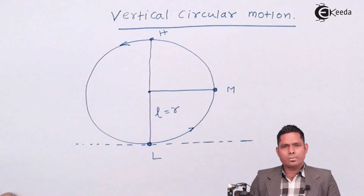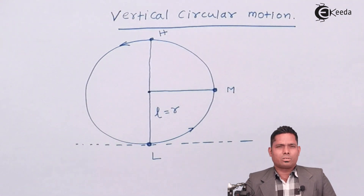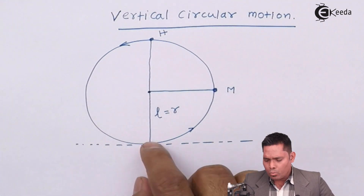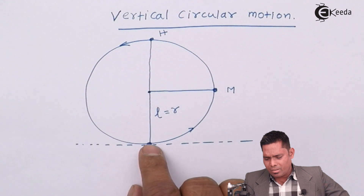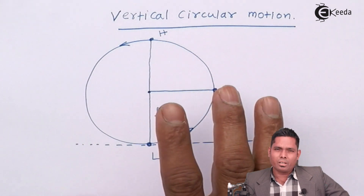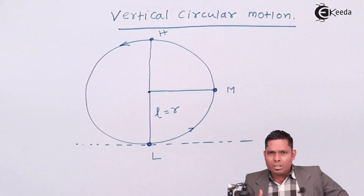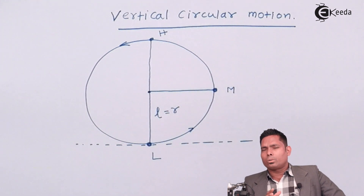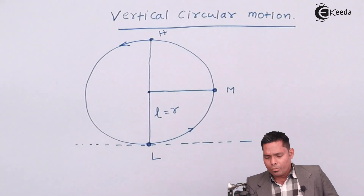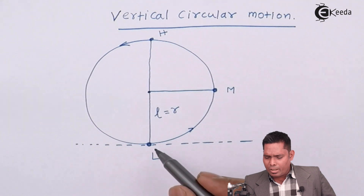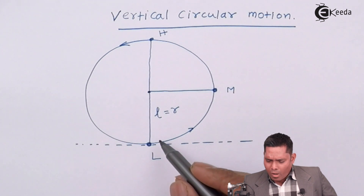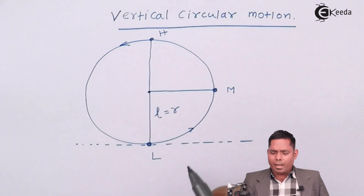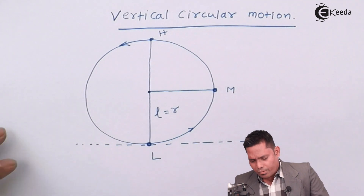We have to find the critical condition for the body to complete the circular motion — what minimum velocity you provide at any position so that it just completes the vertical circular motion. That means we need the minimum velocity at a given place so that the body performs vertical circular motion. We will study the tension in the string at the lowest point, highest point, and the midpoint.